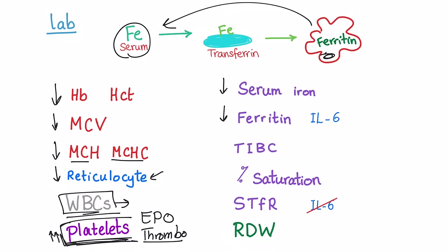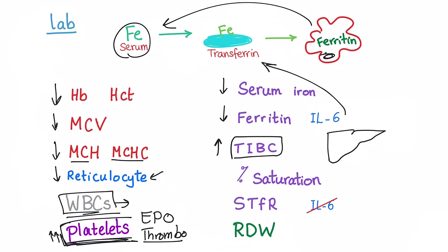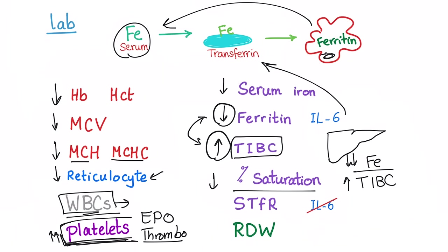For iron studies: serum iron is definitely decreased — it's iron deficiency. Ferritin (stored iron) is also decreased because the stores come from the serum. TIBC is increased — the liver recognizes the problem and tries to produce more carriers to catch the last iron molecules. Ferritin and TIBC are always inversely related. Percent saturation is decreased because iron is low and TIBC is high.